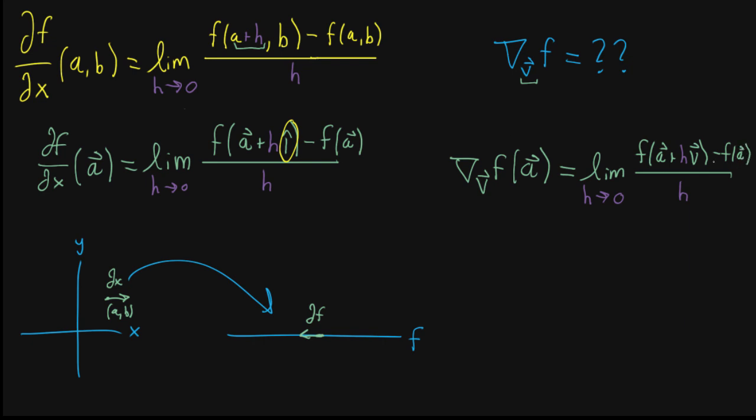And then you subtract off the value of f at that original input. So this right here is the formal definition for the directional derivative. And you see how it's much easier to write in vector notation.